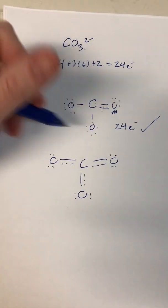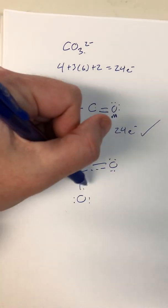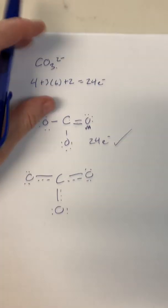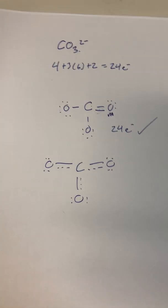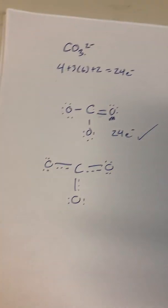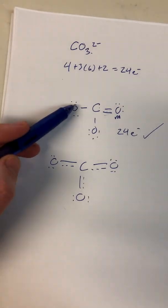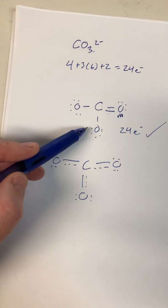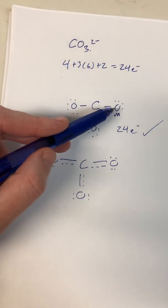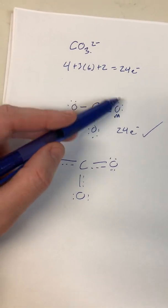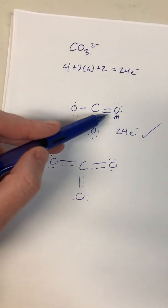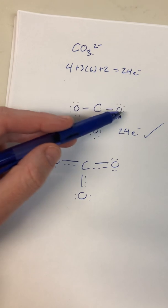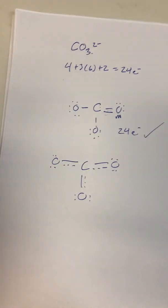This would actually be our final structure — a resonant structure — and it kind of indicates how it's being shared. The reason we knew that is because this carbon is connected to three different oxygens and they're all the same, but one is treated differently. Even if we had two treated differently, it would resonate.